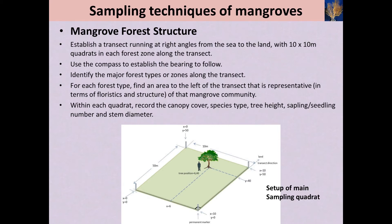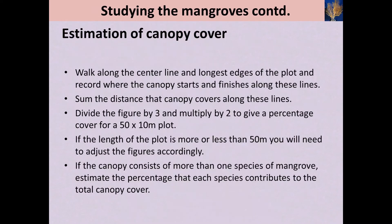Place 10 by 10 meter quadrats in each forest zone along the transect, then identify the major forest type or zone along the transect. If you are monitoring a homogeneous forest type of a narrow mangrove fringe along a creek, the transect can be established parallel to the shoreline. The established quadrat should represent all the mangrove community in the forest patch. Within each quadrat, record the canopy cover, species type, tree height, sapling or seedling number, and stem diameter.